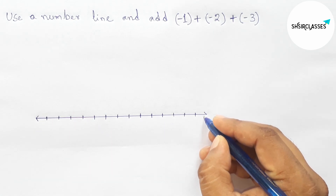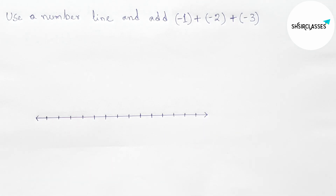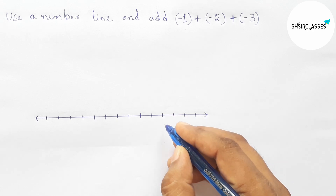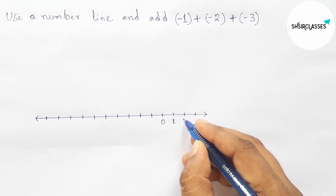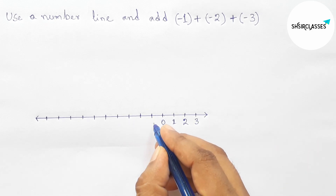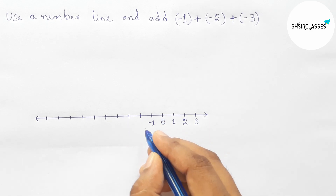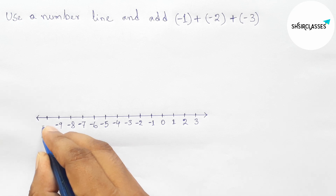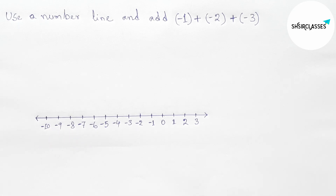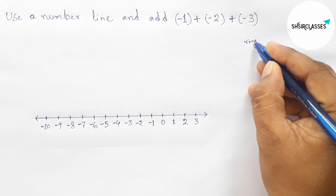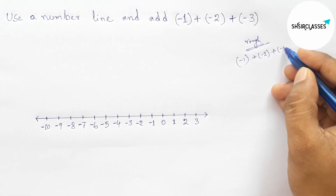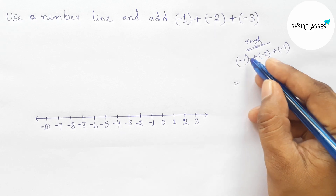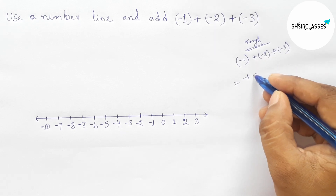Taking arrow marks on both sides. After 0, the right side takes the positive integers, and the left side of 0 takes the negative integers, going up to 10 and continuing. This is a perfect number line. Now, roughly discussing some important calculations.